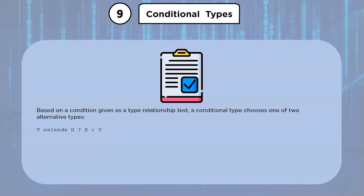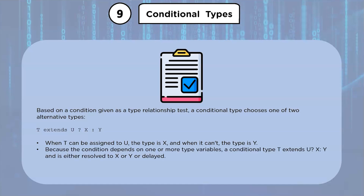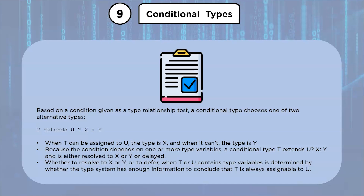Based on a type relationship test, a conditional type chooses one of two alternative types: when T can be assigned to U the type is X, and when it can't the type is Y. A conditional type T extends U ? X : Y is either resolved to X or Y, or delayed when T or U contains type variables. TypeScript also supports distributive conditional types, which are automatically distributed over union types during instantiation.